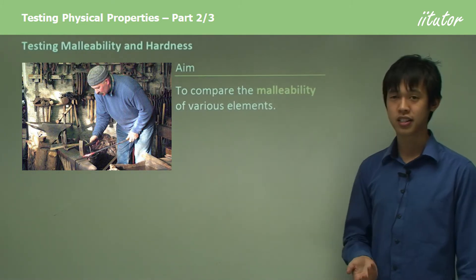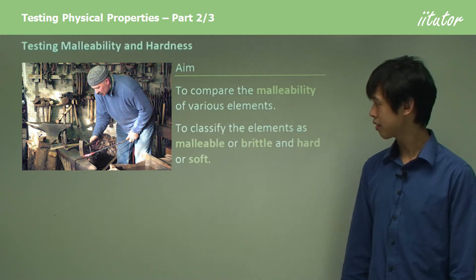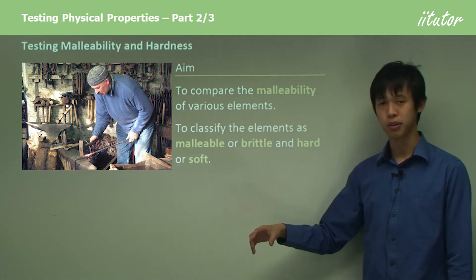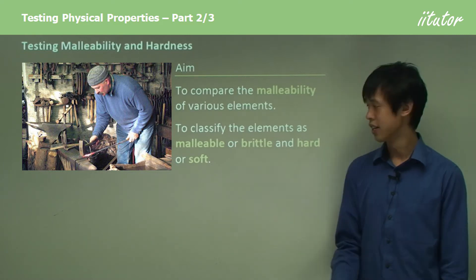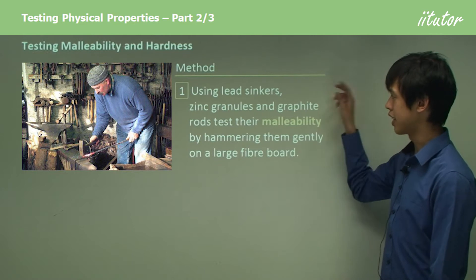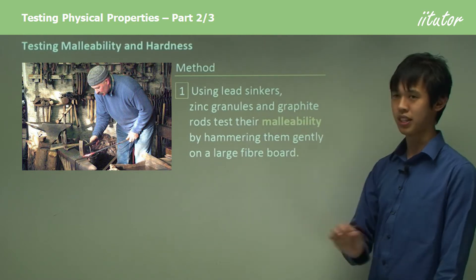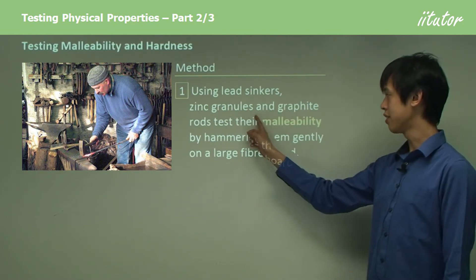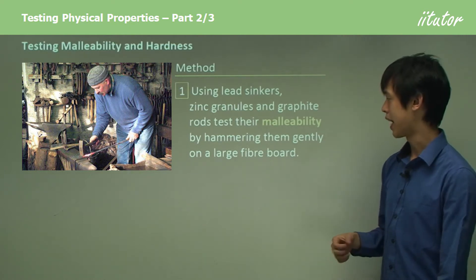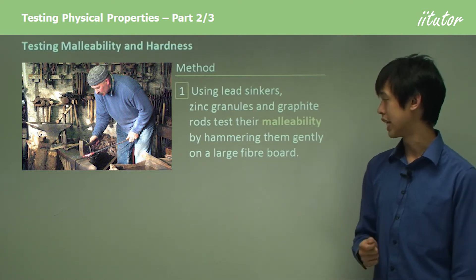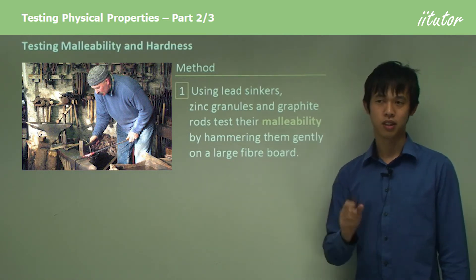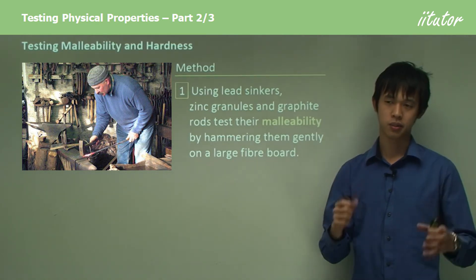So to compare the malleability of various elements is our goal, and to classify elements as malleable, brittle, hard, or soft. What we're going to do is use lead sinkers, which are like little balls of lead, zinc granules, graphite rods, and we're going to test their malleability by hammering them gently on a large fiber board with a ball head hammer.